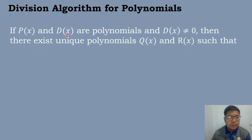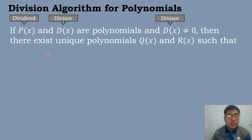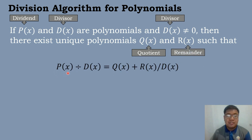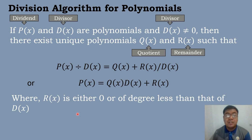Let's have first the division algorithm for polynomials. If P of X, the dividend, and D of X, the divisor, are polynomials, and D of X is not equal to 0, then there exist unique polynomials Q of X, the quotient, and R of X, the remainder, such that P of X divided by D of X equals Q of X plus R of X divided by D of X, or P of X equals Q of X times D of X plus R of X, where R of X is either 0 or of degree less than that of D of X.